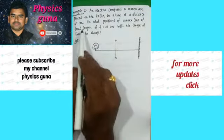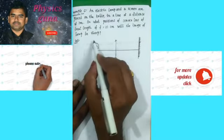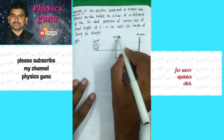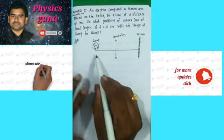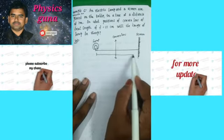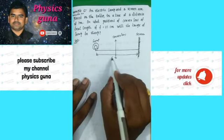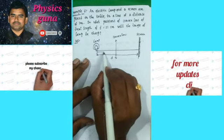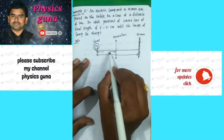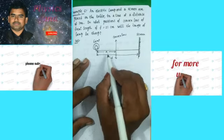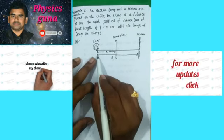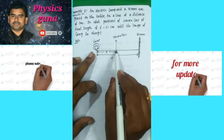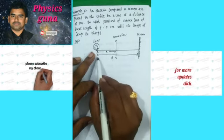The distance between the lamp and the screen is given. This is the lamp, this is the screen, this is the convex lens. The distance between the bulb and the screen I am calling 'd'. The distance between the lamp and the convex lens — which we have to calculate — I am calling 'x'. The total distance from lamp to screen is d, so the distance from the convex lens to the screen is d minus x.